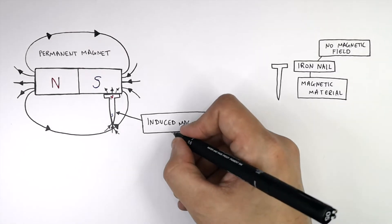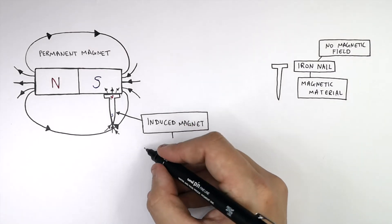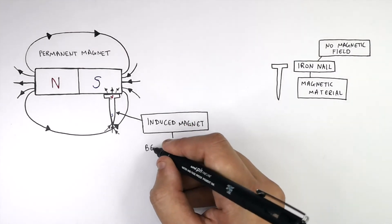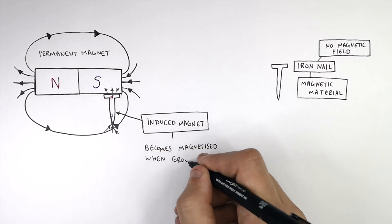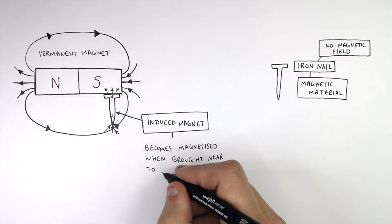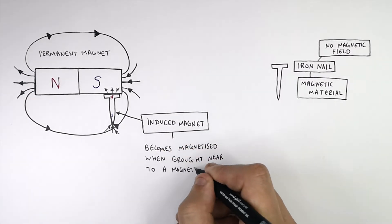So the induced magnet, which is the iron nail, becomes magnetized when brought near or into a magnetic field.